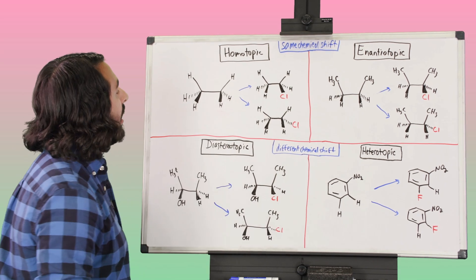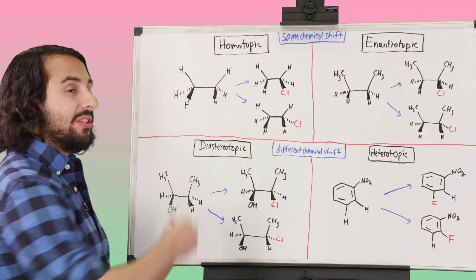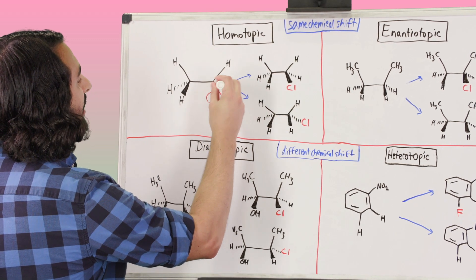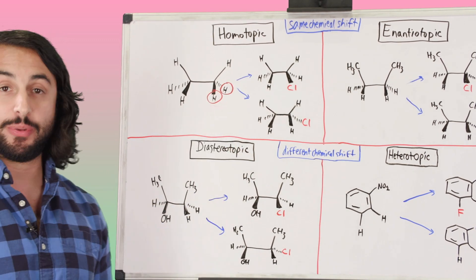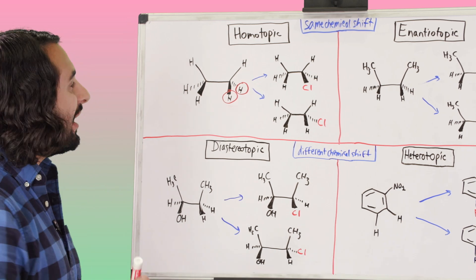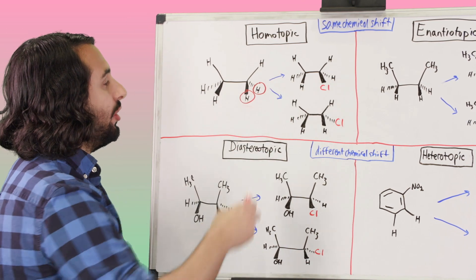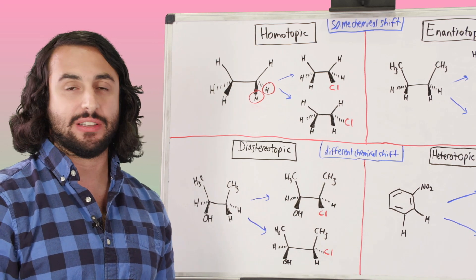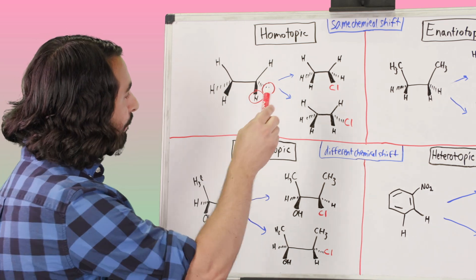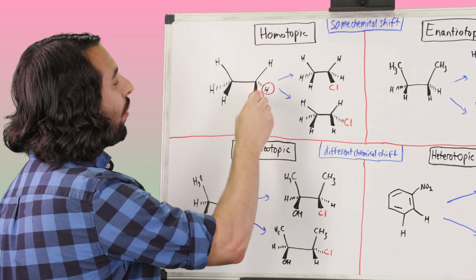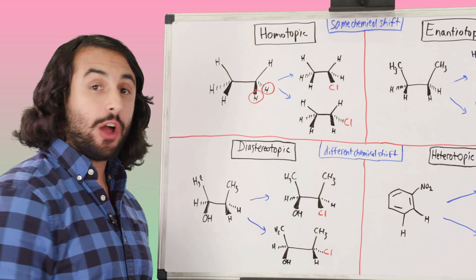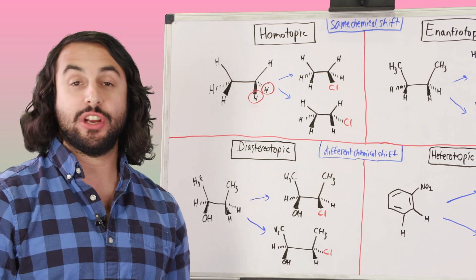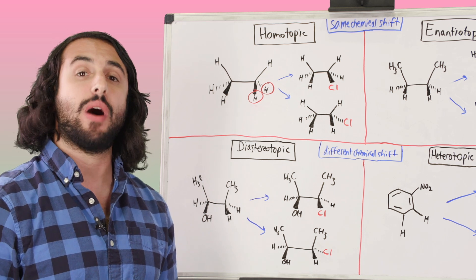Let's start with homotopic. We have this molecule of ethane, and if we take two protons — let's say we're examining these two protons here — and we want to understand the relationship between them. What we can do is draw two new molecules, and in each one we'll replace one of those two protons with some other element, let's say chlorine arbitrarily.